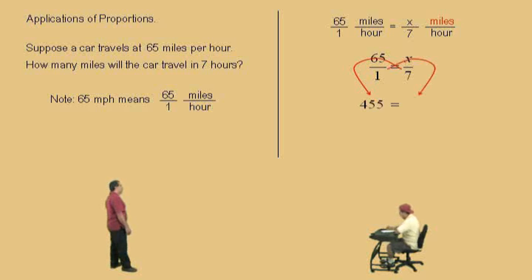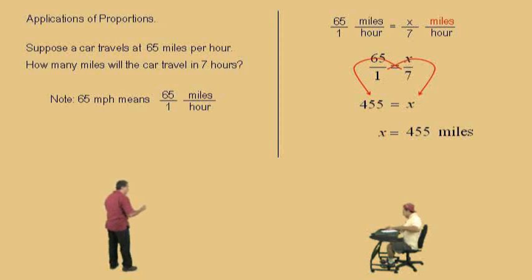455. That's right. And 1 times x? x. That's right. And so, our answer is 455 miles. And so, that's how many miles the car will travel in 7 hours if it's going 65 miles per hour.